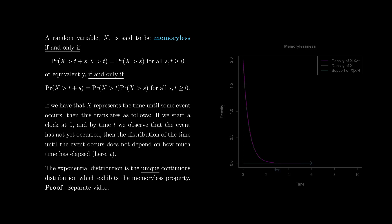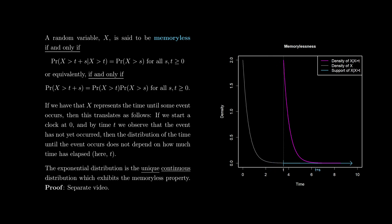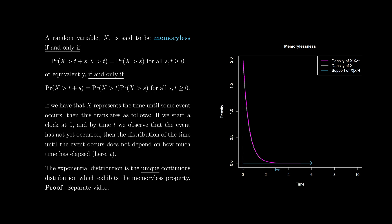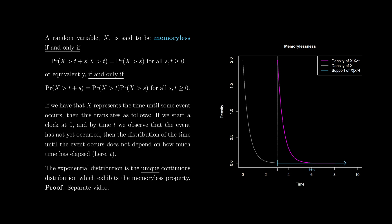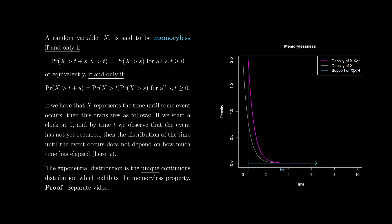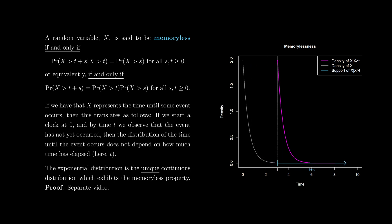A very interesting property of the exponential distribution is that it is the unique continuous distribution which exhibits the memoryless property. A random variable x is said to be memoryless if and only if P(X > t+s | X > t) = P(X > s) for all s, t ≥ 0. An equivalent statement is that P(X > t+s) = P(X > t) · P(X > s) for all s, t ≥ 0.